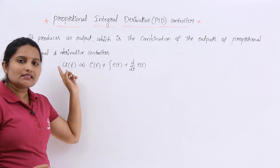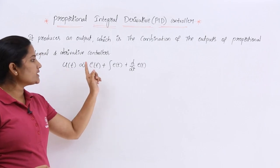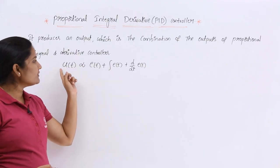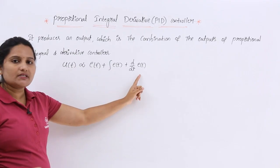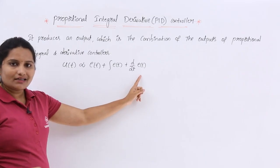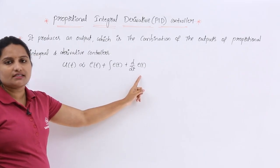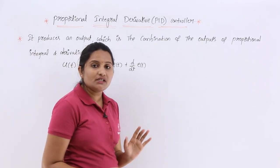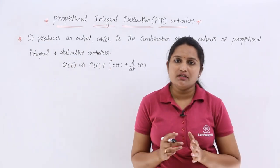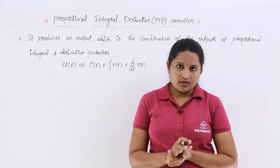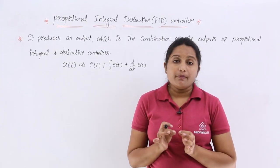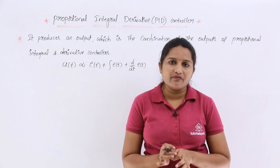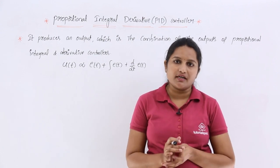In the case of integral controller, the output must be proportional to the integral of the error signal. In the case of differential controller, the output must be proportional to the differentiation of the error signal. But in the case of proportional integral differential controller, the output must be proportional to the combination of the error signal, integral of error signal, and differentiation of error signal.